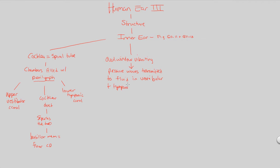Both the vestibular and tympanic canals get this vibrational information, and it flows within the fluid found within these two canals. Once these pressure waves are transmitted within these two canals, they cause the basilar membrane — which is the floor of the cochlear duct — to vibrate specifically up and down after getting this information from the other two layers.